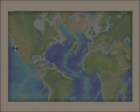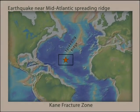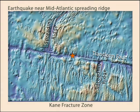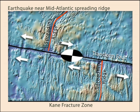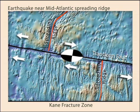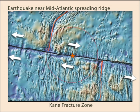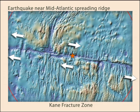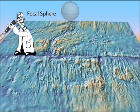Now let's consider a right lateral strike-slip earthquake on the Kane fracture zone in the Atlantic. This earthquake will produce compression in the northeast and southwest quadrants, and dilatation in the northwest and southeast quadrants. Since there are no nearby seismometers, the P wave first arrival patterns are observed at distant stations. Seismic energy travels away from the earthquake in all directions, so we need to consider the three-dimensional geometry of the ray paths.